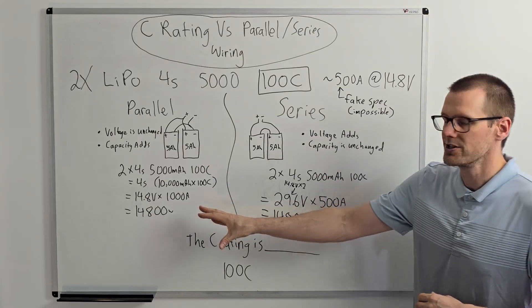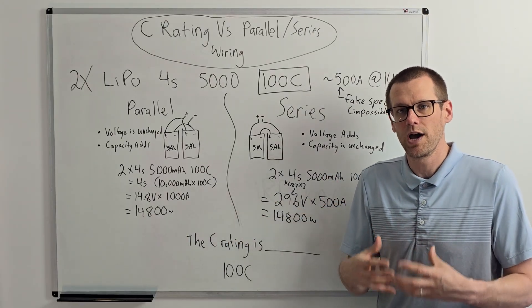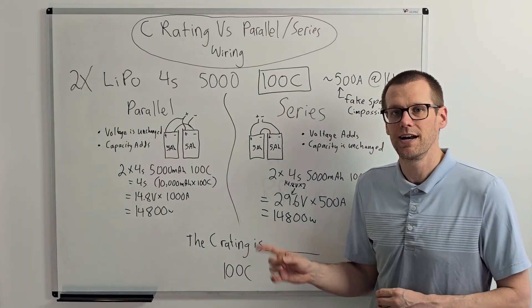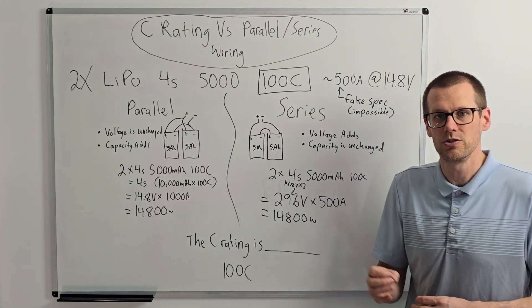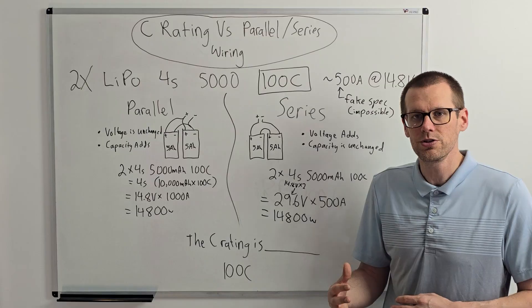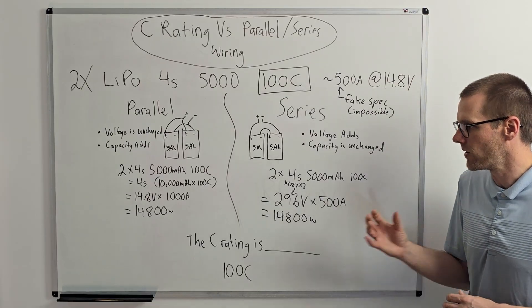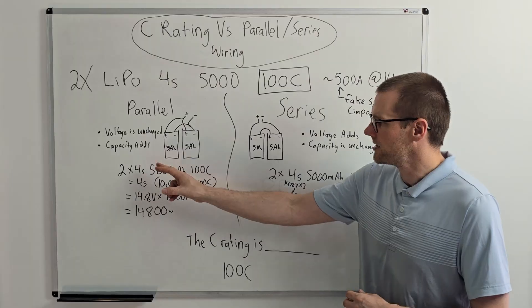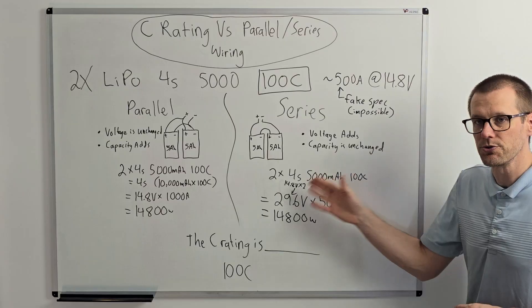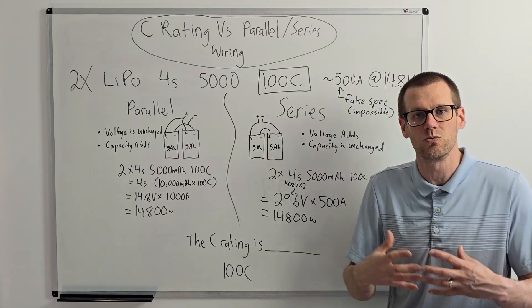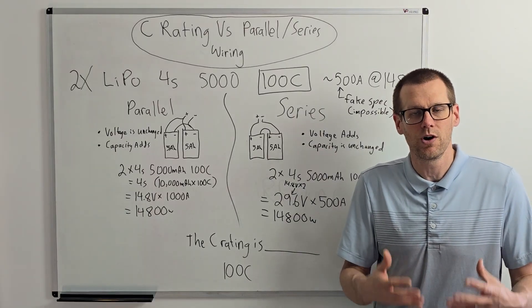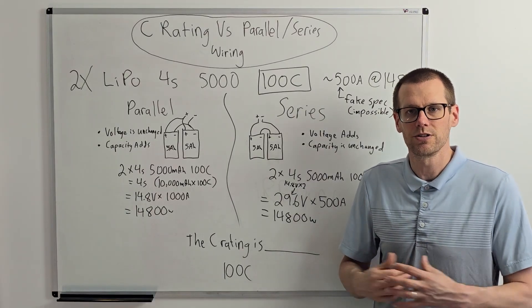And then we get 14,800 watts. So both of these configurations get to that same output the same way. And what is ultimately happening to our C rating? Well, the C rating is completely unchanged. The C rating is known to be a constant. So regardless of whether we place the pack in parallel or series, the C rating is not changing. What is changing as we noticed is the capacity, which is affecting our continuous discharge current. And we know that the voltage on our series configuration is what is changing there. So at the end of the day, our 100C pack remains to be a 100C pack, regardless of the wiring configuration.